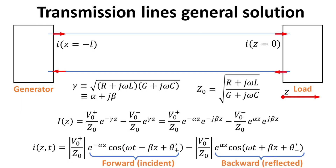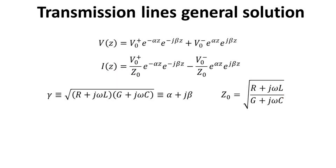One can also derive an analogous expression for the current in the time domain. For obvious reasons, the forward and backward waves are also called the incident and reflected waves respectively. Here we summarize the propagating wave solutions for the voltage and current for the transmission line in phasor form. Suppose that the line parameters R, L, G, C are given, then only V0-plus and V0-minus are unknown. The rest of this video will be devoted to evaluating these two unknowns.